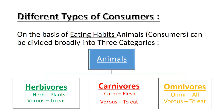Number 1: Herbivores. 'Herb' means plants, 'vores' means to eat. Basically, plant-eating animals.